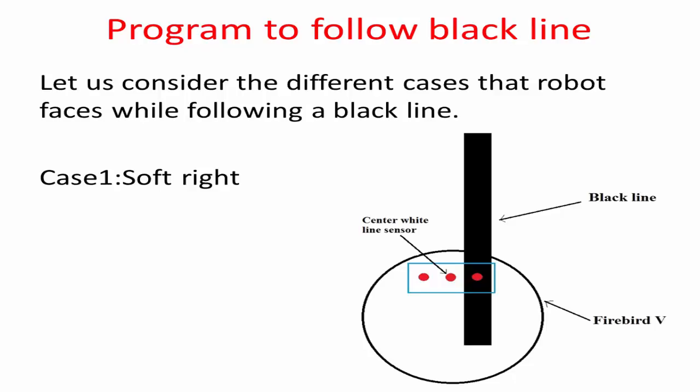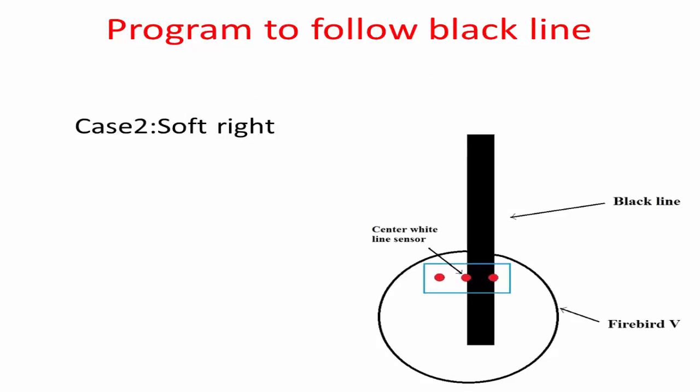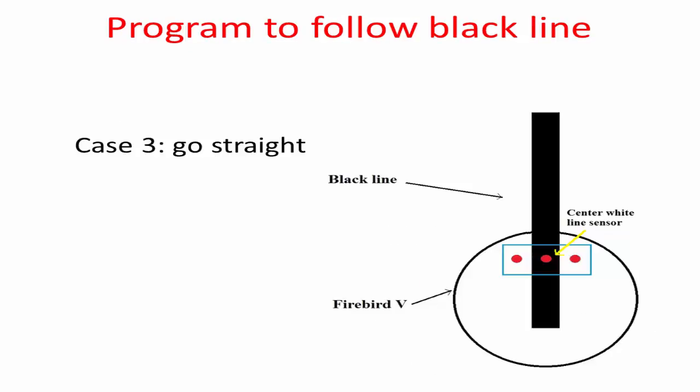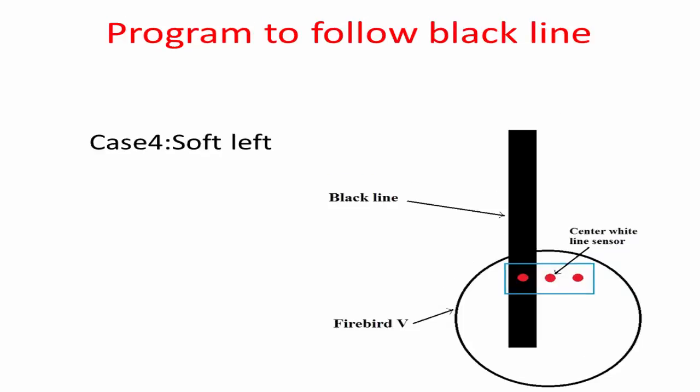Program to follow black line: let us consider the different cases the robot faces while following a black line. Case 1: when the black line is below the third line sensor, the robot should be made to turn soft right. Case 2: when the black line is below the second and third line sensors, the robot should be made to turn soft right. Case 3: when the black line is below the second line sensor, the robot should go straight. Case 4: when the black line is below the first line sensor, the robot should turn soft left.